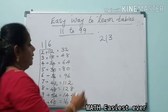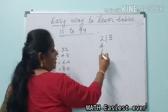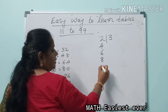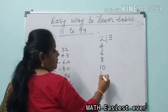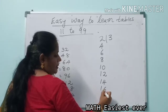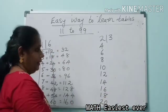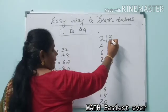Say the 2 table: 2 ones is 2, 2 twos are 4, 2 threes are 6, 2 fours are 8, 2 fives are 10, 2 sixes are 12, 2 sevens are 14, 2 eights are 16, 2 nines are 18, 2 tens are 20.